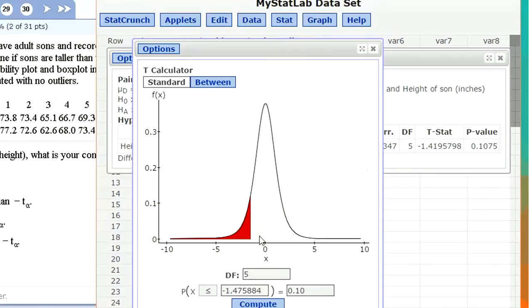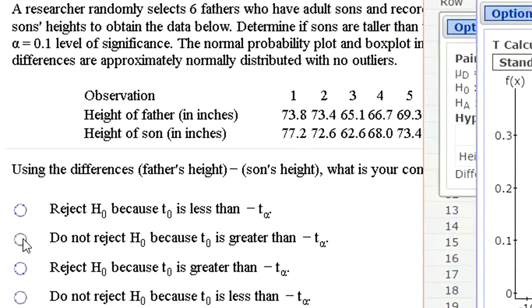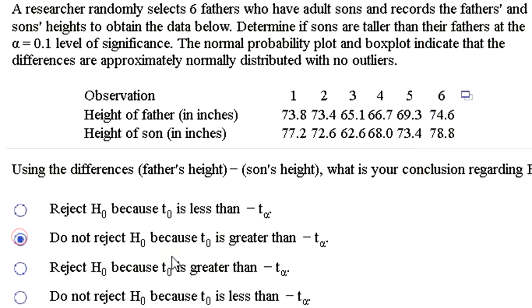So I would only reject if the t statistic was less than that cutoff out in the rejection region, but it's not. So I do not reject because t naught is greater than t alpha. T naught is my test statistic. T alpha is my cutoff, my critical value. We could have of course concluded that based on the p value of 0.1075 being greater than my alpha level 0.1. Same thing, same conclusion, just a different way of looking at it.